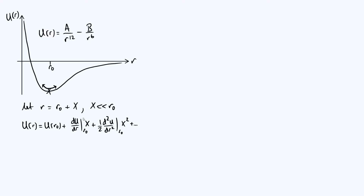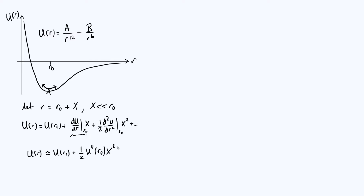By definition, R₀ is at the minimum of the curve, and at a minimum the first derivative is zero. So the linear term in X disappears because dU/dr at R₀ is zero. What we're left with is U(R) ≈ U(R₀) + ½ U''(R₀) · X², where double prime indicates a second derivative.